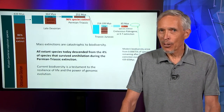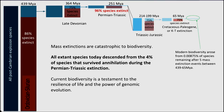It's an ironic situation that mass extinctions are catastrophic to biodiversity because a large fraction of species go extinct. However, the good news is that the possibility for new and innovative forms of life accelerates, so ironically some of the greatest leaps forward in biological diversity occur after a mass extinction event. The current biodiversity on the planet is such that all existing species descended from the 4% of the large species that survived the annihilation during the Permian-Triassic extinction — a testament to the resilience of life and the power of genomic evolution.